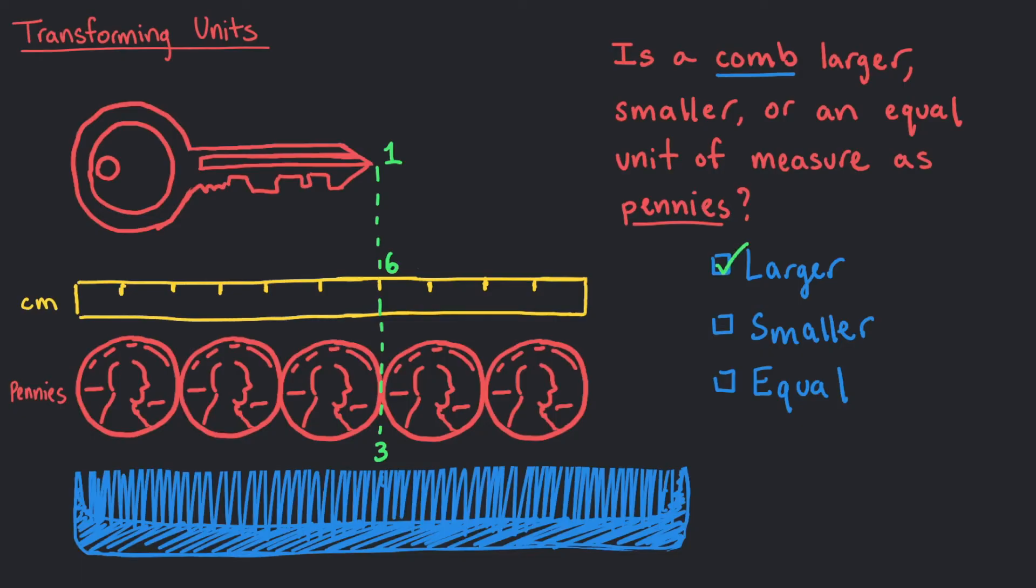That's right! A comb is a larger unit of measure because 1 comb is greater in length than 1 penny. This key is about half a comb long. While it took 3 pennies to measure the length of the key, it only took half of a comb for the same measurement.